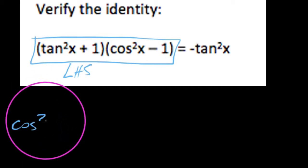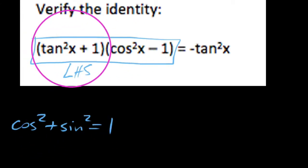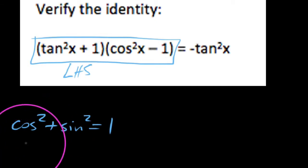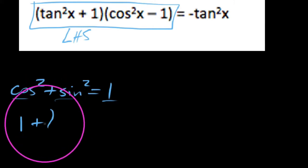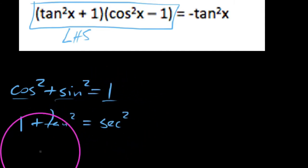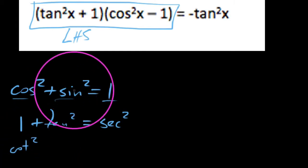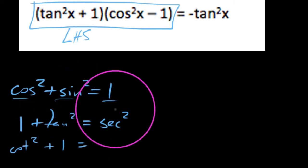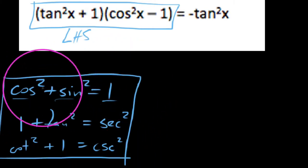Cosine squared plus sine squared equals 1 — that's one of our Pythagorean identities, and we're dealing with things here that look somewhat like it. If I divide everything by cosine squared, I get 1 plus tangent squared equals secant squared. If we divide everything by sine squared, cosine squared over sine squared equals cotangent squared, and 1 over sine squared equals cosecant squared. So here's the entire list of all three Pythagorean identities — can we get them to work for us, knowing these things are already true?